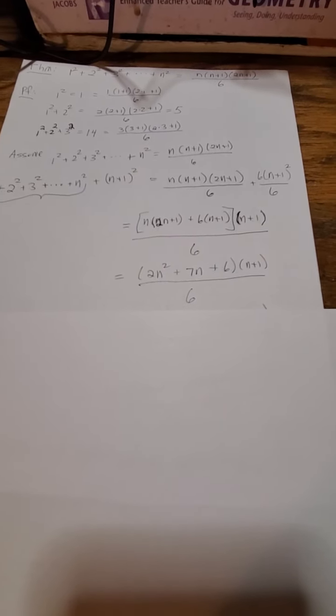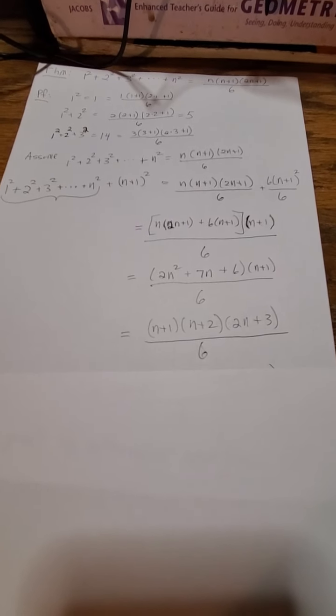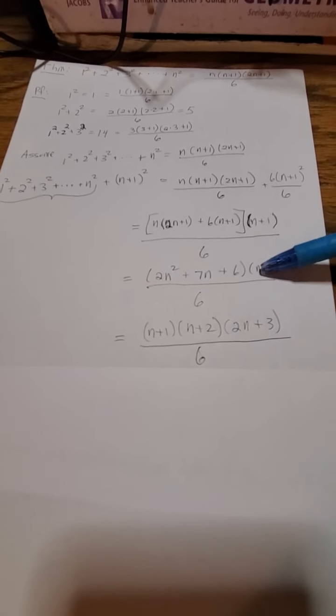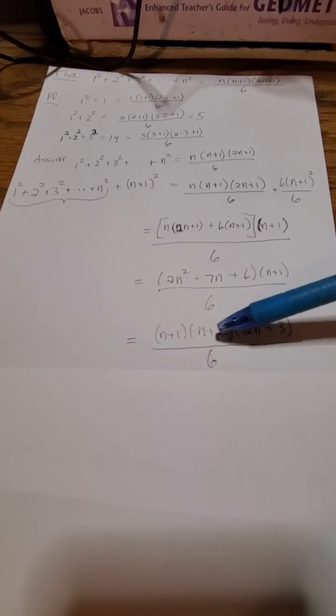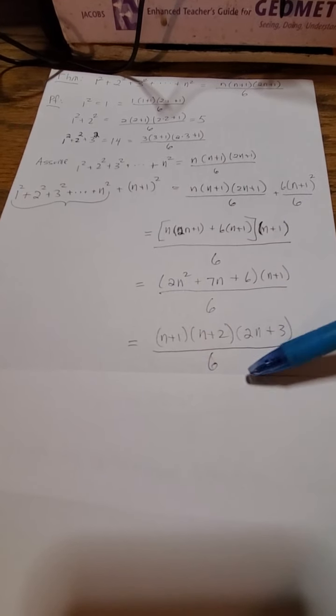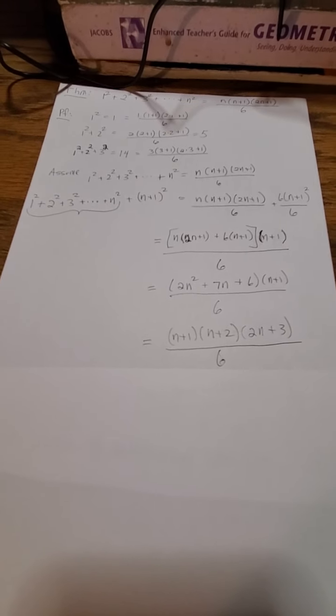But this could be factored. And it factors to n plus 1 times, well, the n plus 1 is over here. But this guy here could be factored to n plus 2 times 2n plus 3 over 6. And that really, you can see that we got the proof.